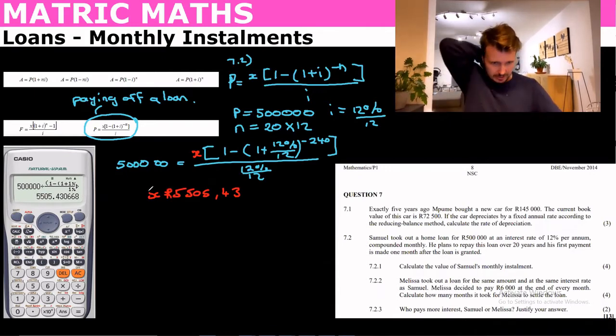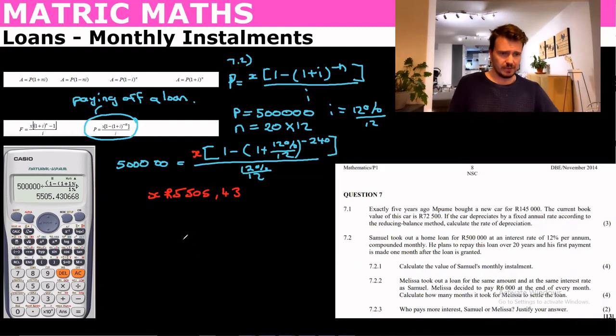So next thing is they're saying that Melissa took out a loan for the same amount at the same interest rate but decided to pay 6,000 every month. How many months? So this one they're wanting to find n. So we can do that by simply putting in the same formula but we're going to not use the 240, the 20 years, because that's different.